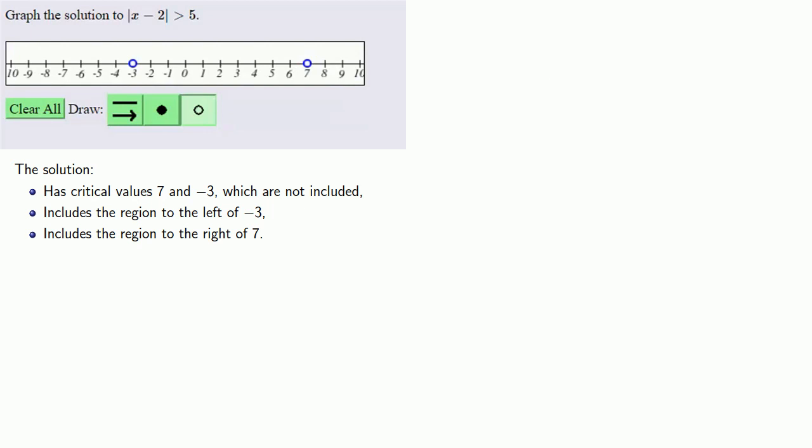Let's graph our solution. We've already graphed the endpoints. We want the region to the left of -3, so we'll switch to our line tool and start at -3 and go left.